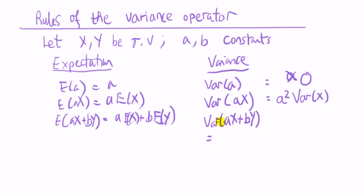And then finally, variance of ax plus by, well, I won't ask you to guess this one, it's a squared times the variance of x plus b squared times the variance of y plus something called the covariance, two times the covariance of x and y.